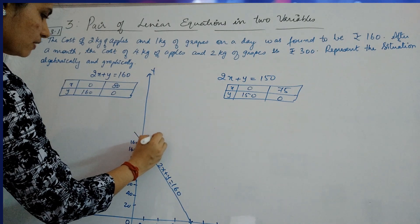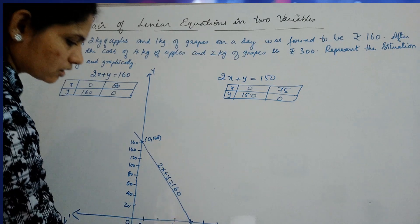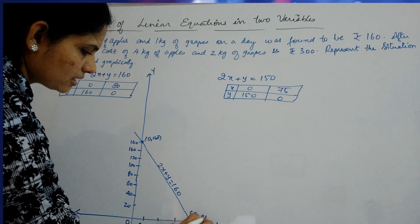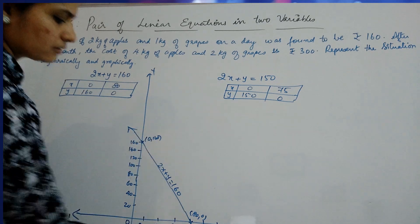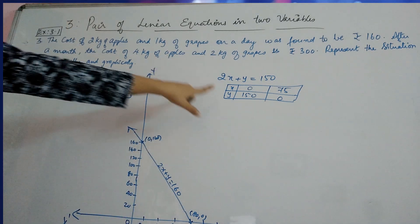And this will be your 2x plus Y equal to 160. This is your 0, 160. And this is your 80, 0. Okay. Now, the other line which you need. This is an extending line.